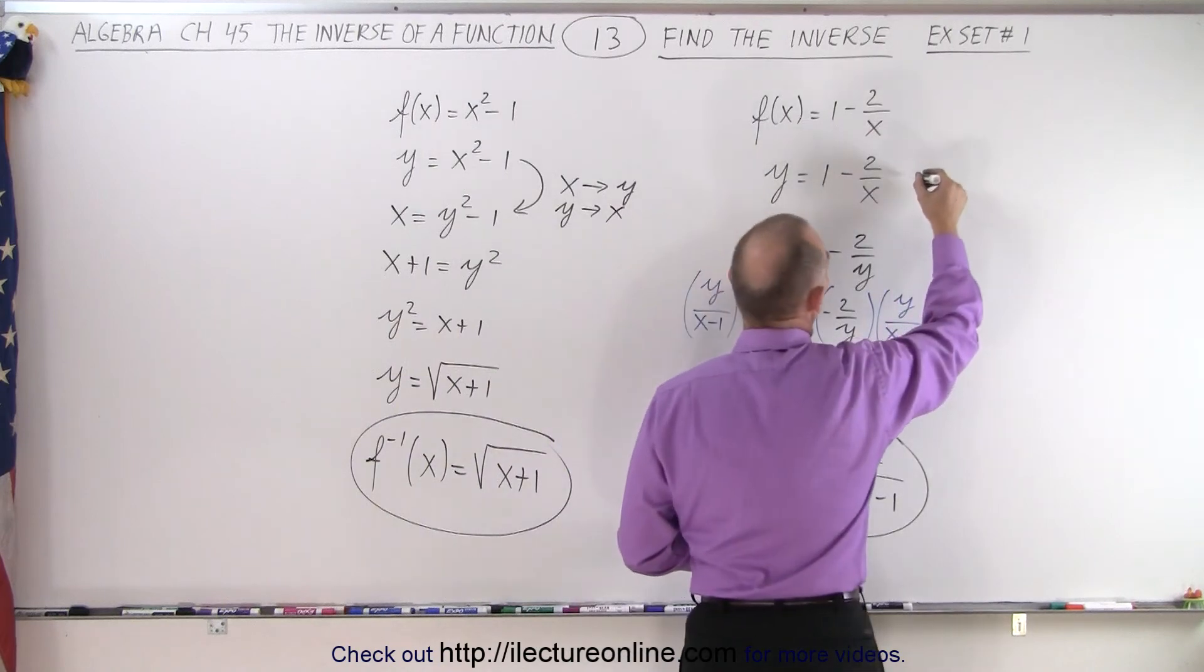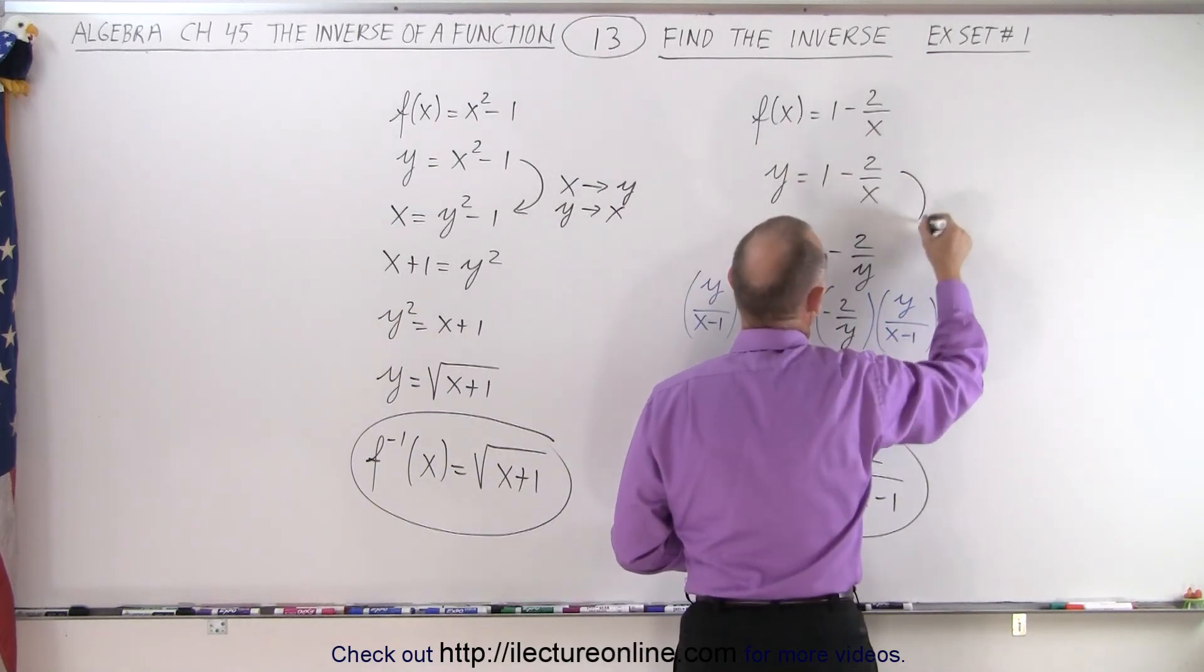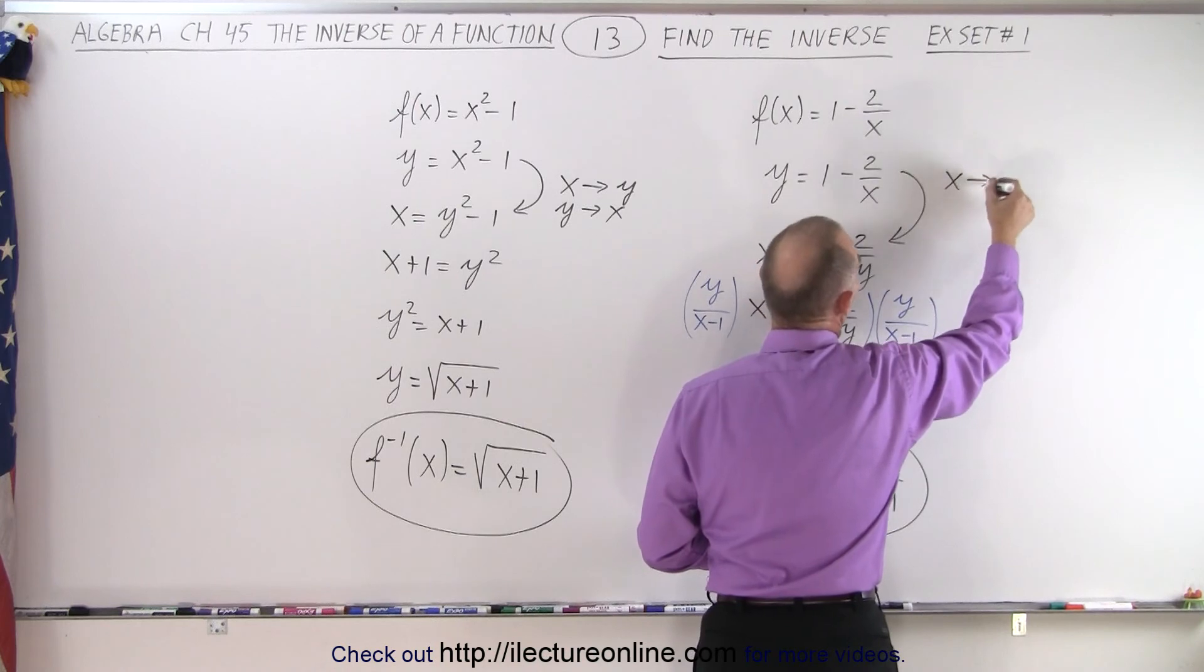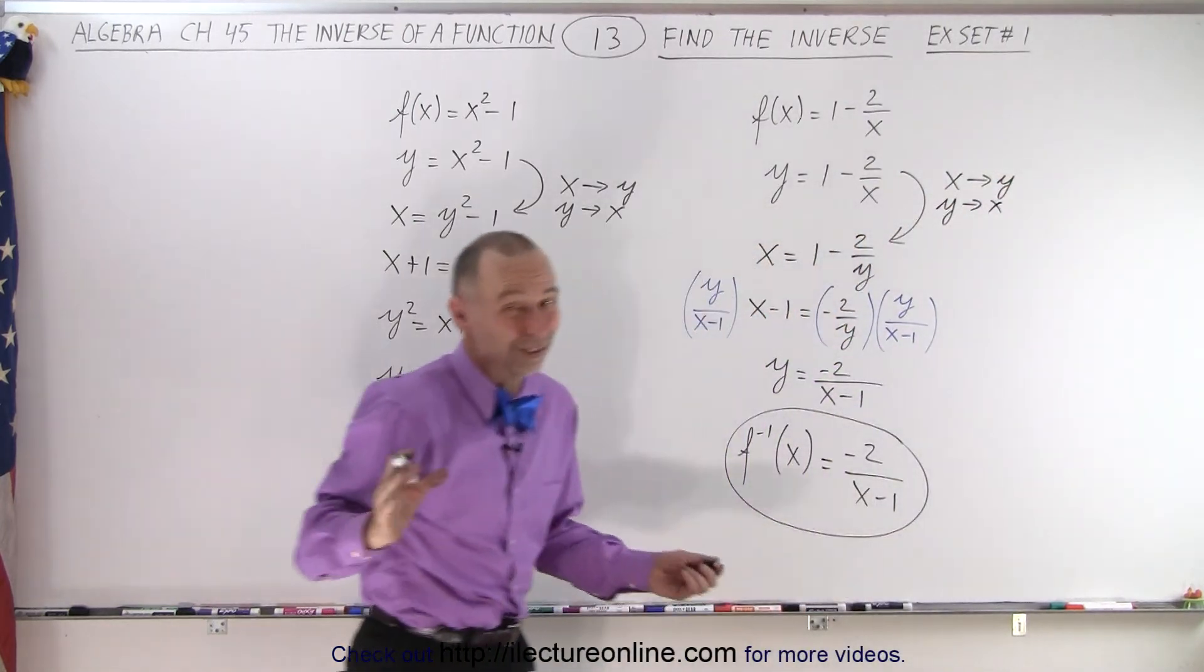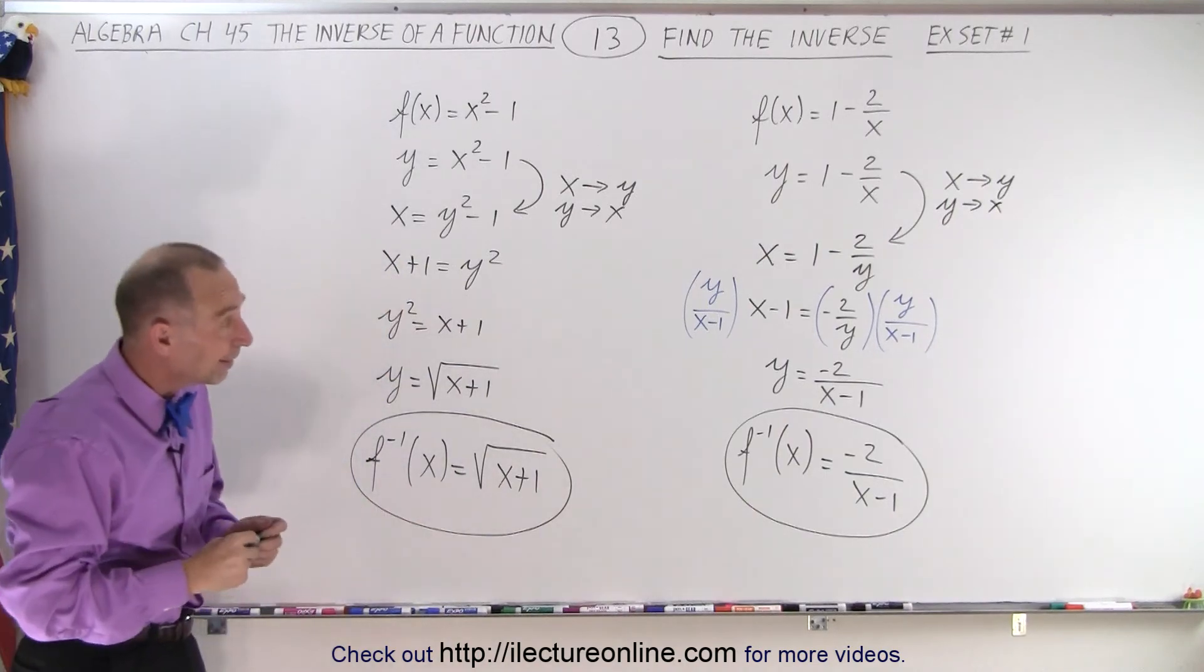The same thing over here. What we do here is we go from here to there, to there, by saying every x becomes a y, and every y becomes an x. Otherwise, of course, it wouldn't be correct. And that is how it's done.